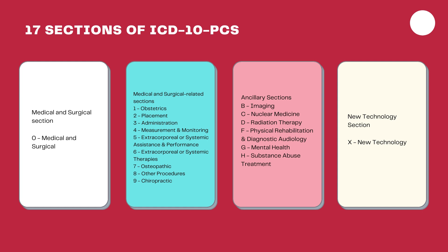Sometimes, to complete coding an operative report, you might have to use codes from multiple sections of the PCS. For example, for a PTCA — percutaneous transluminal coronary angioplasty — along with left heart catheterization and left ventriculography: for the PTCA, you would assign a code from the medical and surgical section for the angioplasty; for the left heart catheterization, you code from the measurement and monitoring section; and for the left ventriculography, you assign a code from the imaging section. All three codes together make up the complete procedure coding.